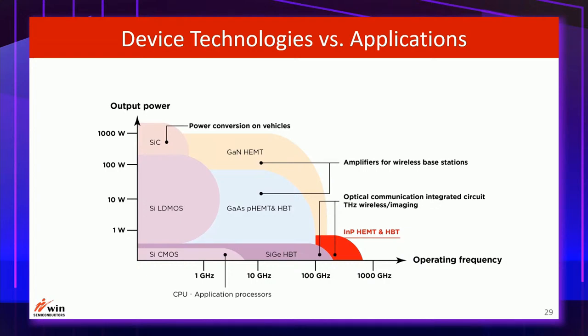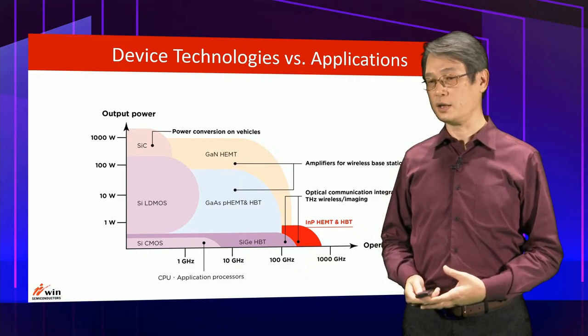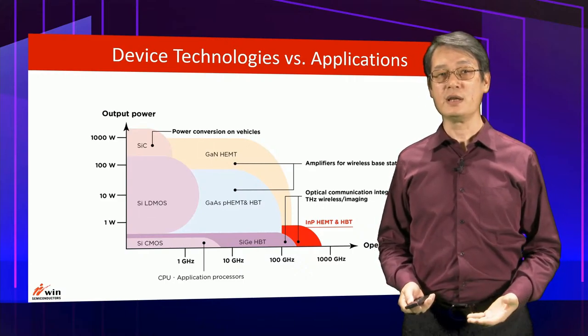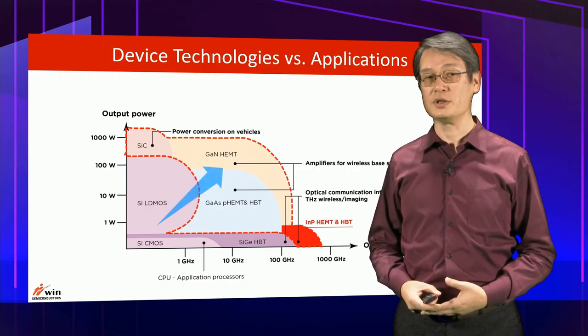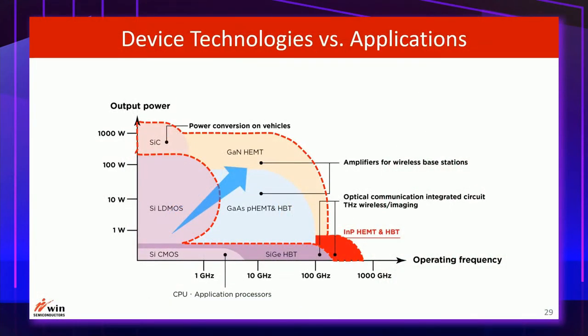This slide provides a plot of output power versus operating frequency for RF applications across various device technologies and associated applications. There is no single technology good for every application. Therefore, the right device technology must be carefully chosen for the targeted application. High frequency and high power present different challenges. The greatest challenge is for applications toward the upper right corner of the chart, where compound semiconductor device technology is the best solution.